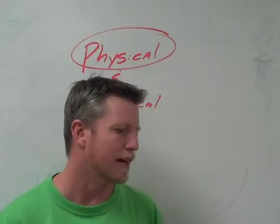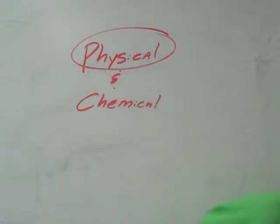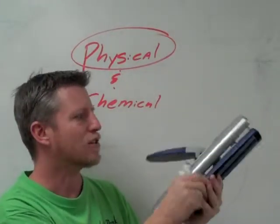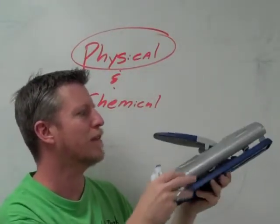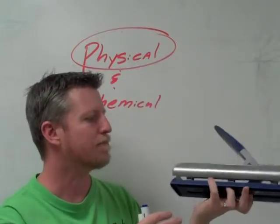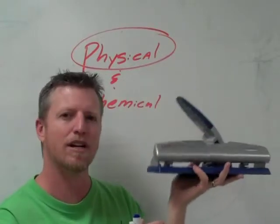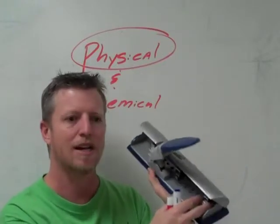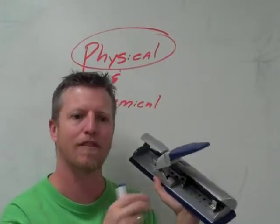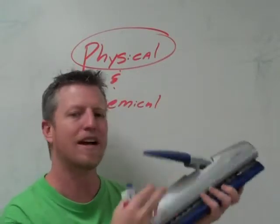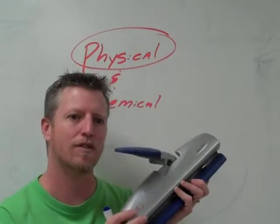So we could describe lots of things. If I wanted to describe, let's say, for example, this hole punch. Well, it's heavy. It's gray on the top. It's blue on the bottom. It's made out of metal and plastic. Those are some things. I could actually put it on a scale and weigh it. If I wanted to know its boiling point or the metals, I could actually put that in. I could take the metal off and figure out what its boiling point is or its melting point. Any way I could describe this would be a physical characteristic.